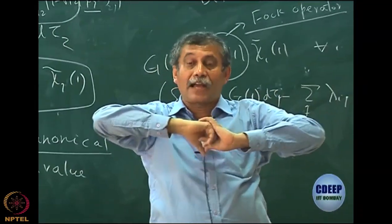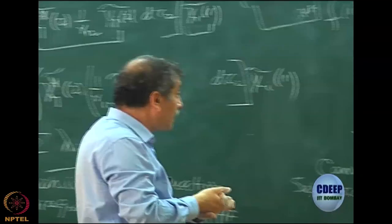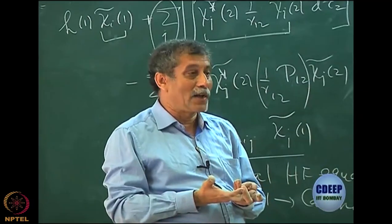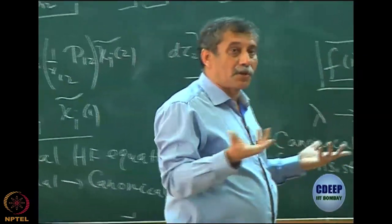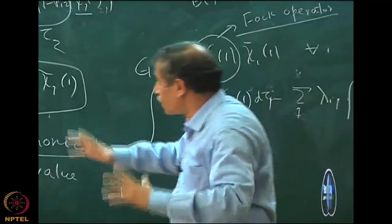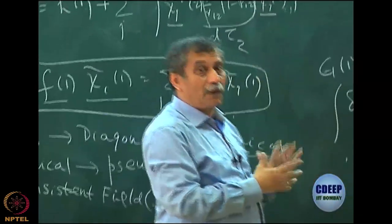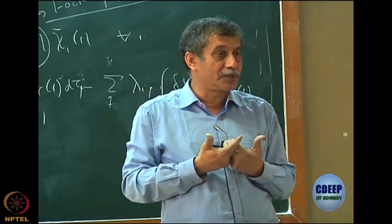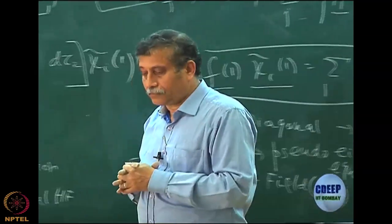I will bring in canonical Hartree-Fock formally, and then you will have all those interpretations: HOMO energy, LUMO energy, HOMO-1, LUMO+1, and all kinds of things you can talk about. The interpretation of orbital energy and Koopmans' approximation will not come unless I go to the canonical equation. For the time being I have assumed it is canonical. But even then, the Fock operator depends on the spin orbital, so it has to be solved by an SCF procedure — a self-consistent field procedure.